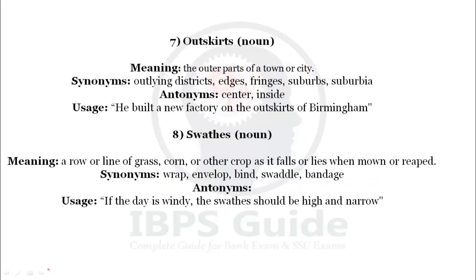Our next word is 'outskirts.' Outskirts is a noun meaning the outer part of a town or city — the area just outside the main city. Synonyms of outskirts: outlying district, edges, fringe, suburbs, and suburbia. These are all synonyms of outskirts.